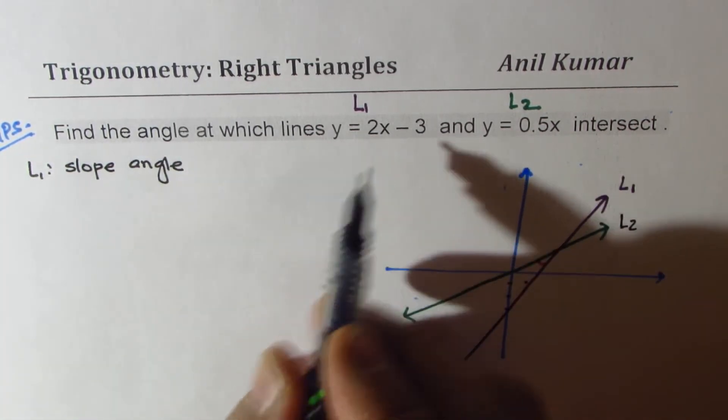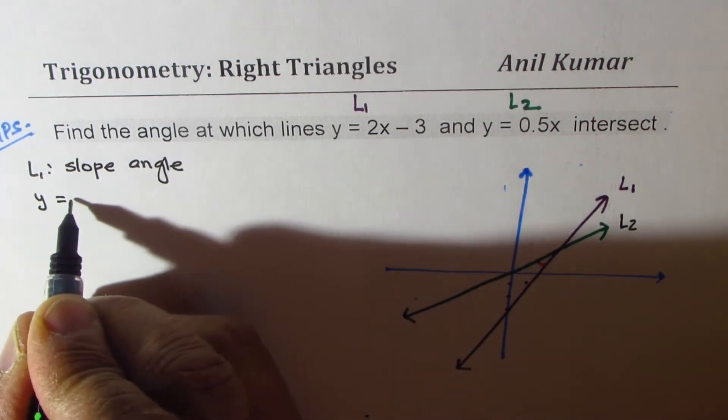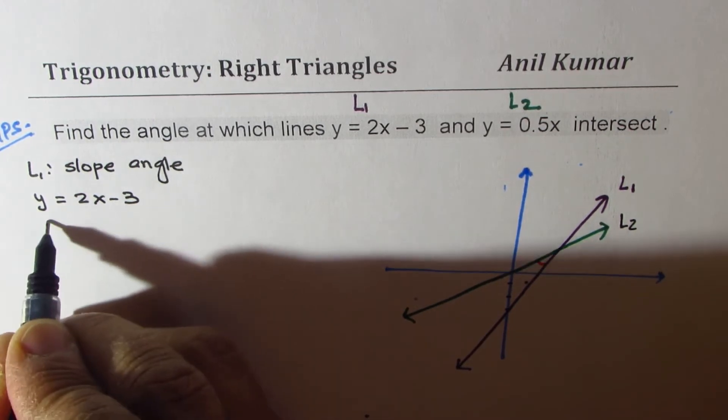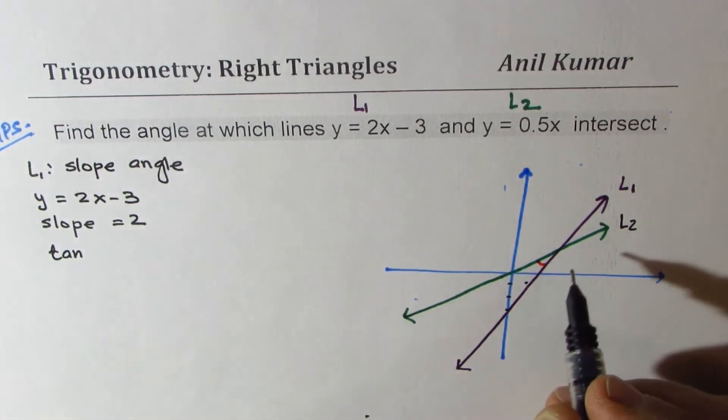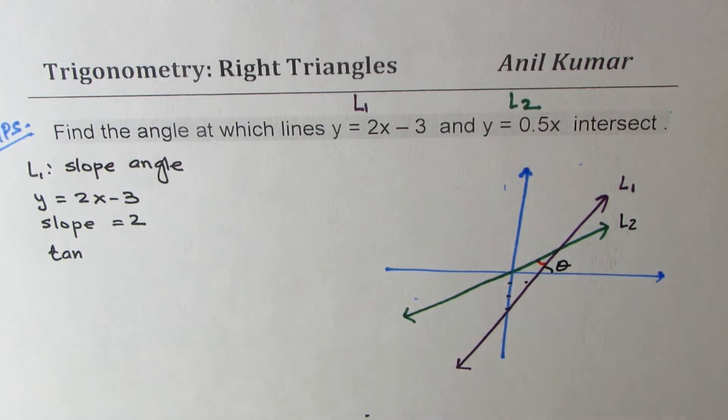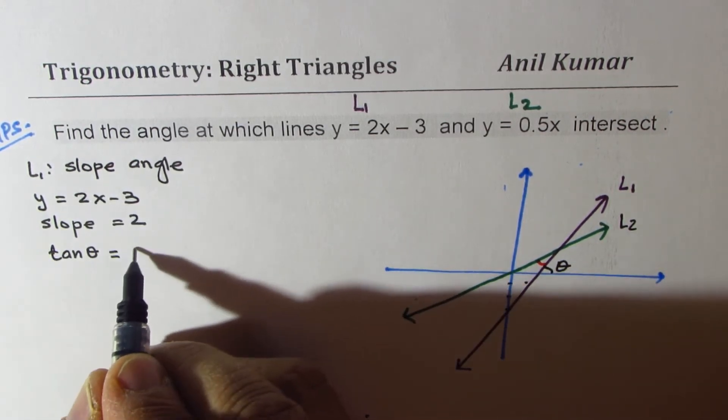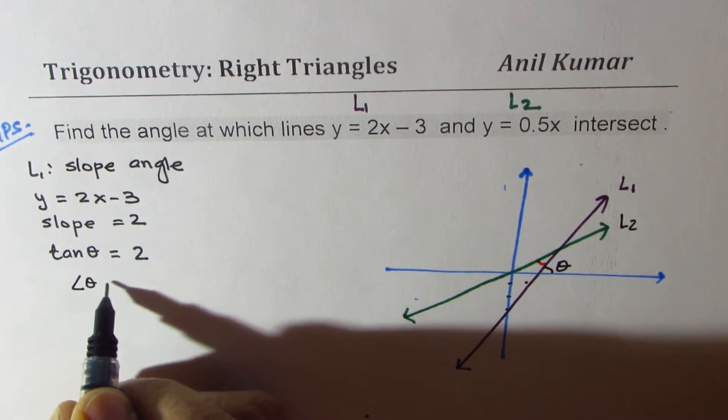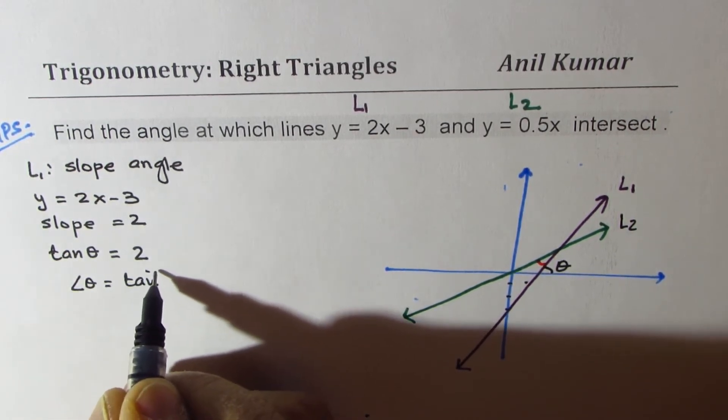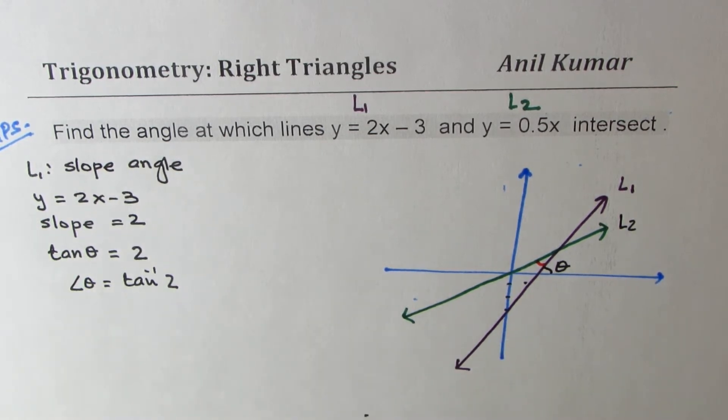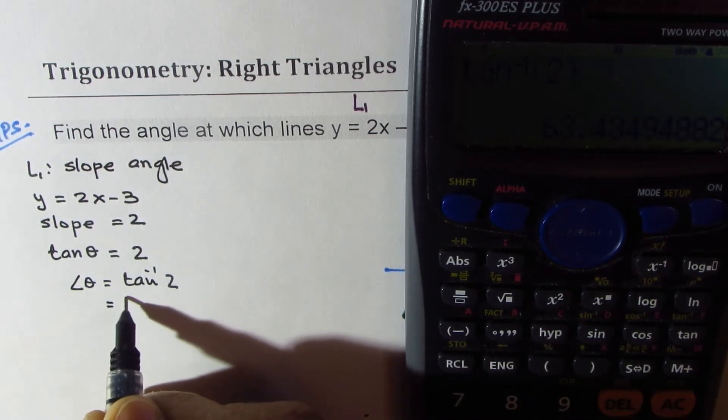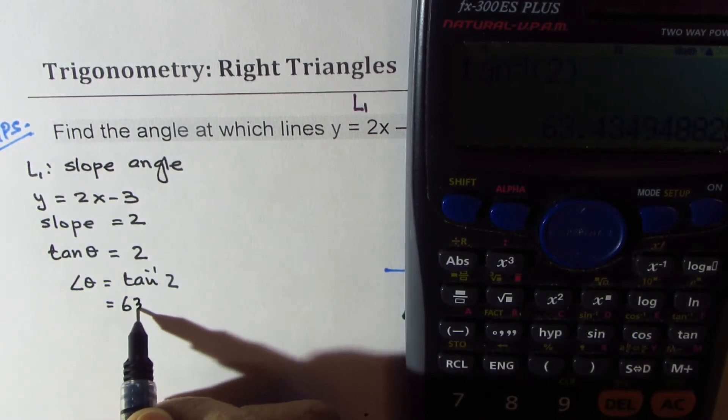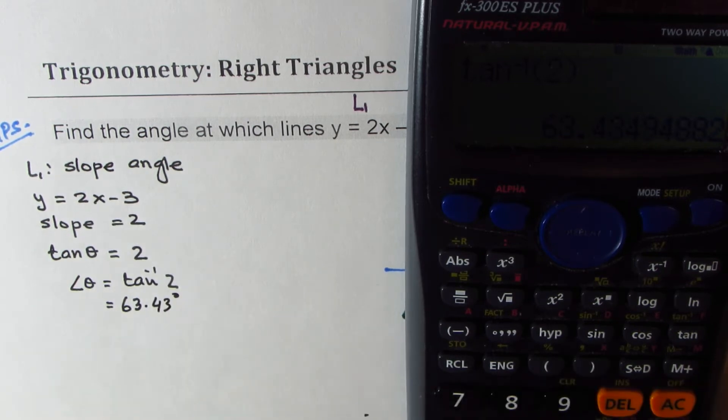For line 1, which is equation y equals 2x minus 3, we know slope equals 2 and therefore tan theta is equal to 2. And so the angle theta is equal to tan inverse of 2. Let's use the calculator. Find this angle. So which is shift tan inverse of 2. And that is equal to 63.43 degrees.